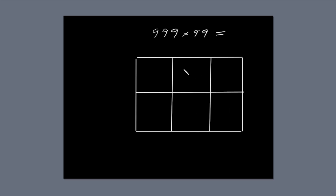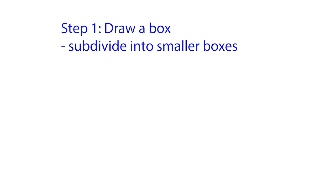Next, draw a diagonal line through each of the six small boxes. You might find you can draw a diagonal through more than one of the smaller boxes at a time. That's step one. Draw a box, subdivide it into smaller boxes and draw diagonals through them.